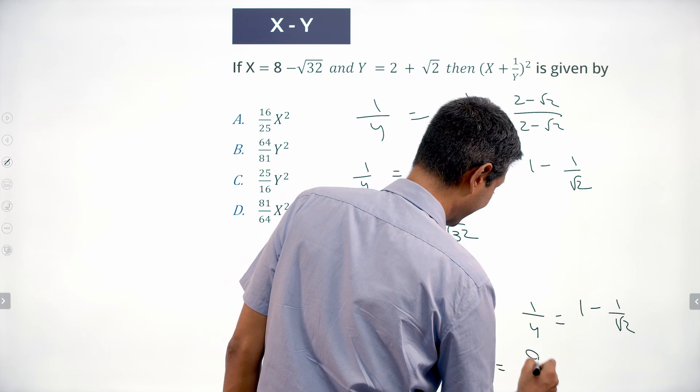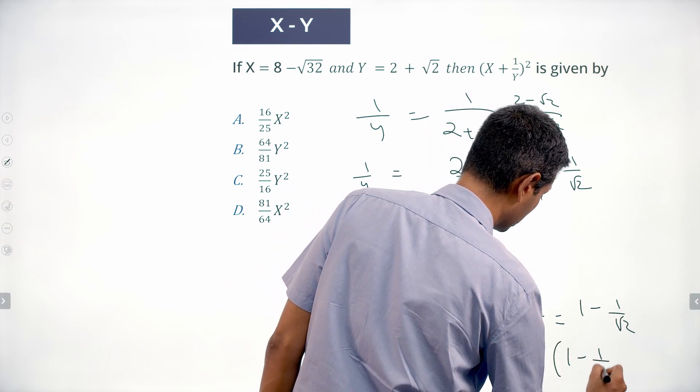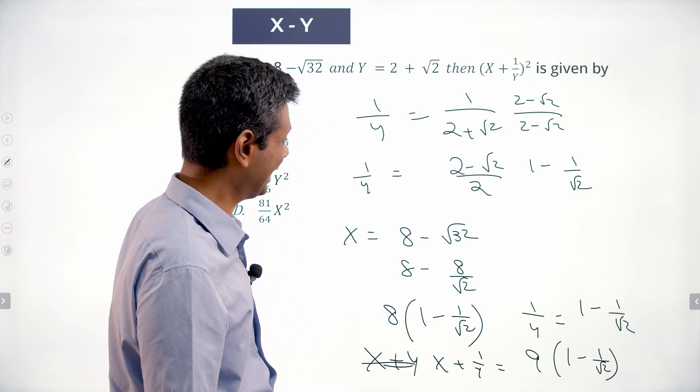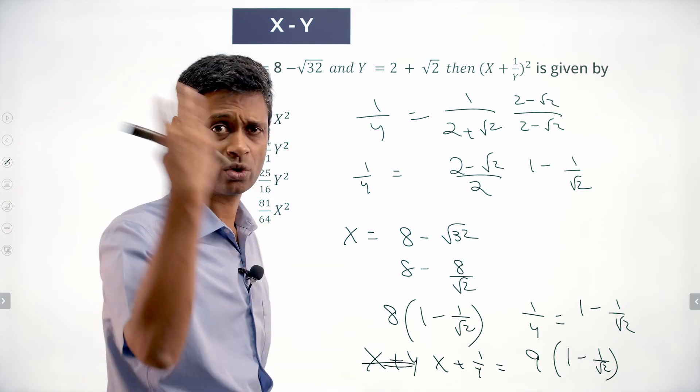That is going to be 9 times 1 minus 1 by root 2. x plus 1 by y whole square is 9 times 1 minus 1 by root 2 the whole square.